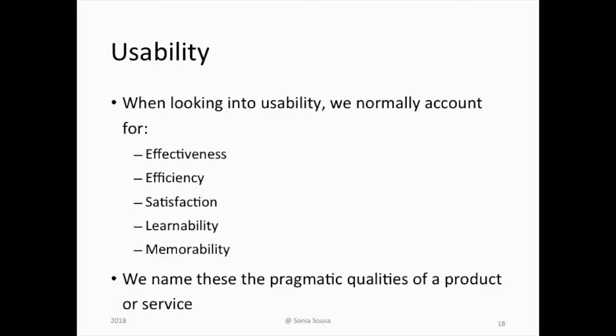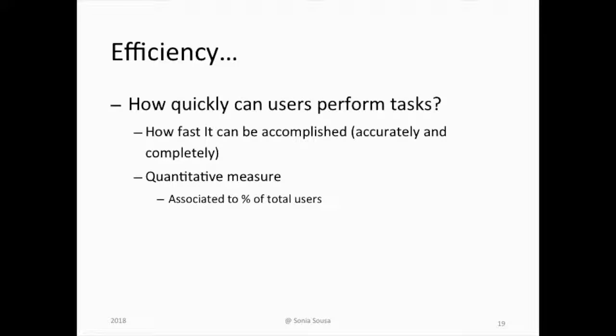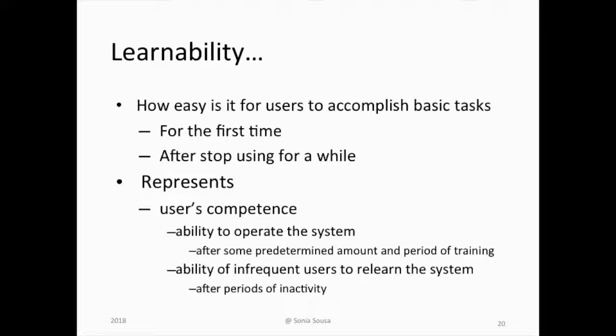Efficiency is measured by how fast the user can perform certain tasks, like logging into a system or application. We measure this based on time — it's a time-to-task measurement. It gives us a quantitative number, and usually we set up an ideal time to finish the task and calculate the percentage of total users who were able to finish it on time.